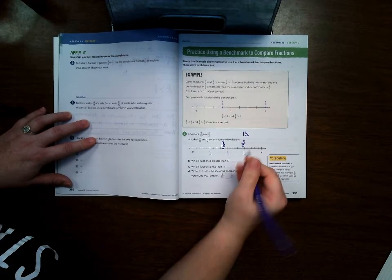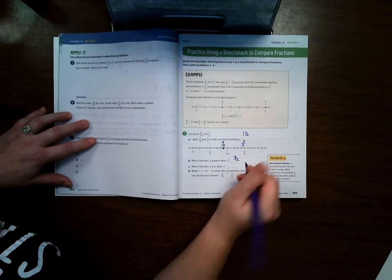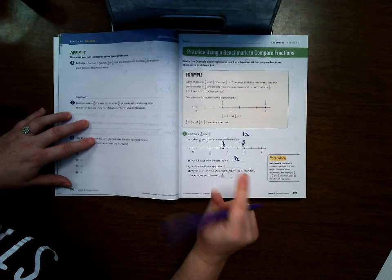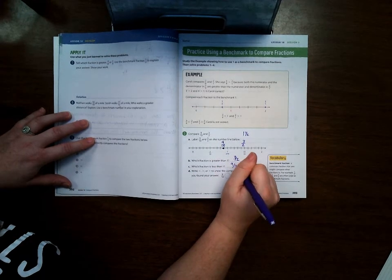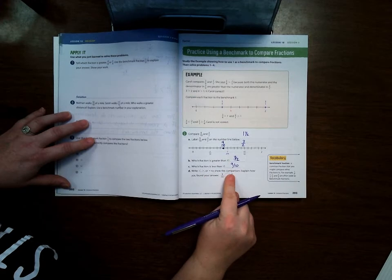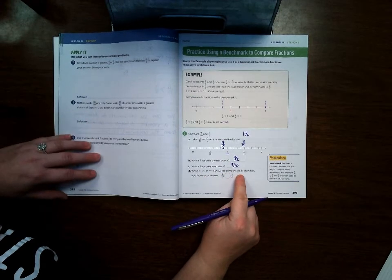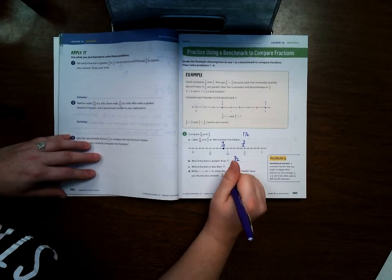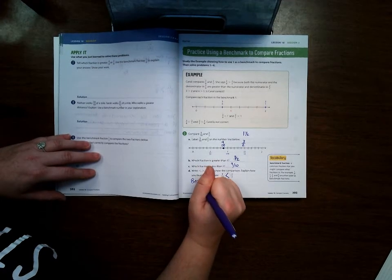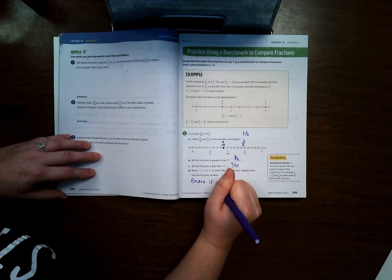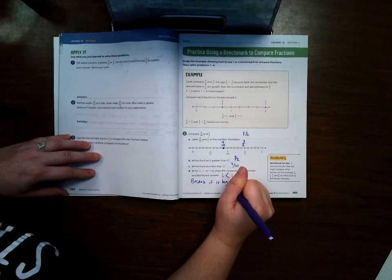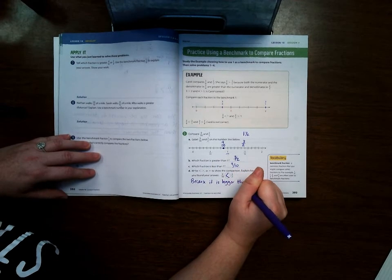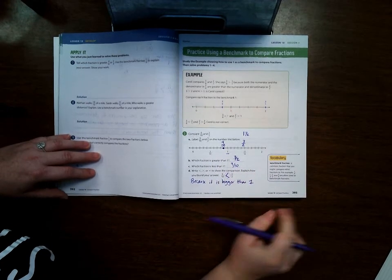Which fraction is greater than 1? Three-halves. Which fraction is less than 1? Nine-tenths. Write greater than, less than to show comparison. Explain how you found your answer. Because it is bigger than 1, and this one is less than 1.